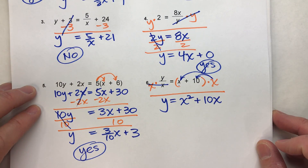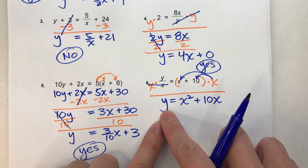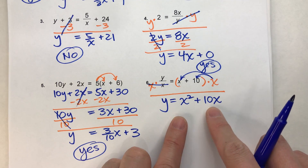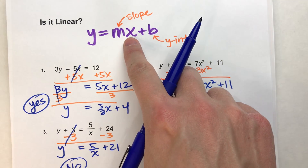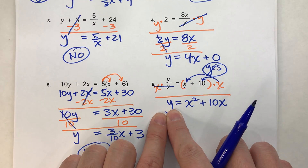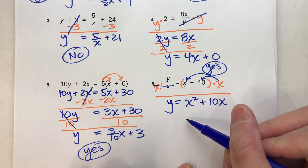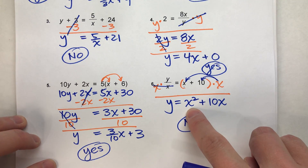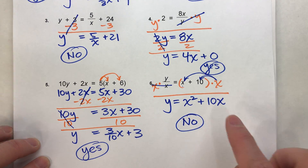Now we check: is this in slope-intercept form? We need y equals something times x plus a regular number, but here I have x squared. If this were something like y equals 7 plus 10x, that would work — but not with an x squared term. We can't have an x squared or another variable in slope-intercept form. This is not linear.